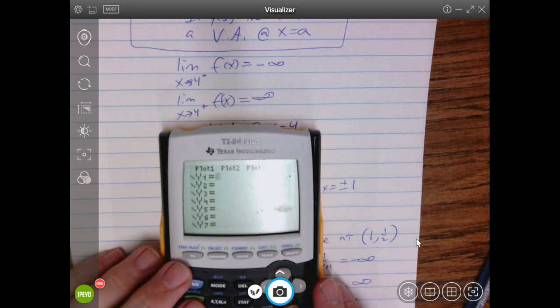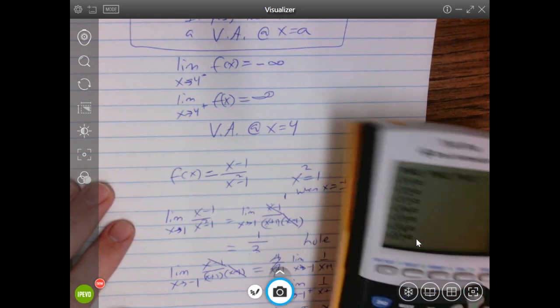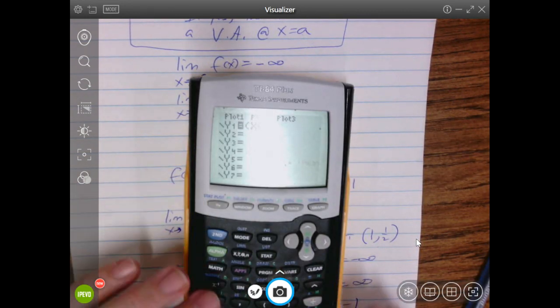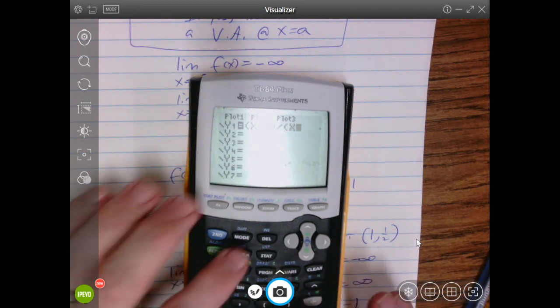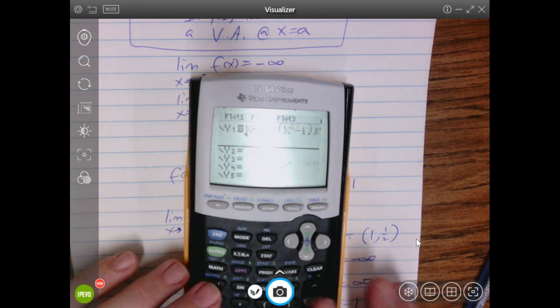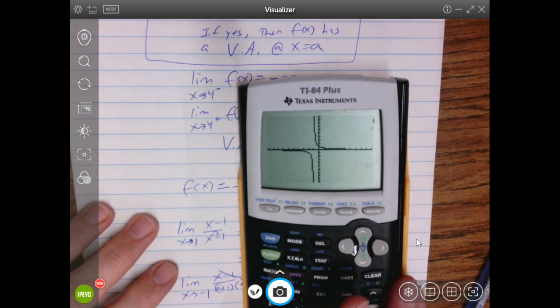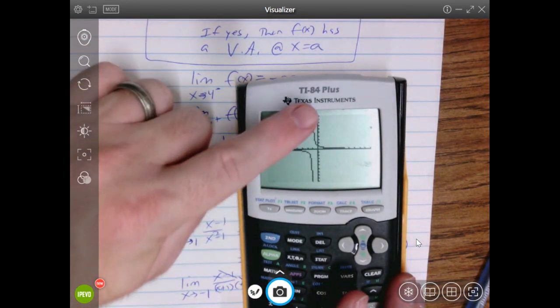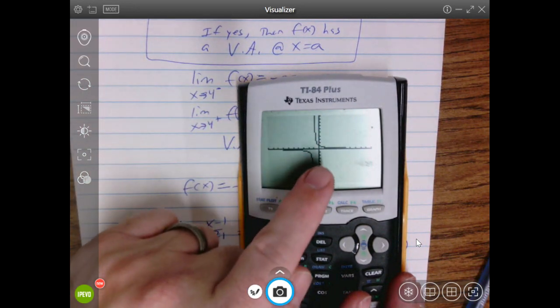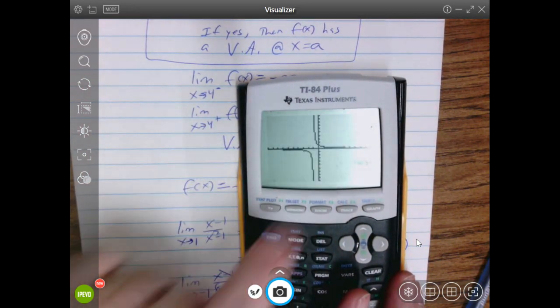Well, we're going to see a hole and we're going to see an asymptote. What did I do? x minus 1 divided by x squared minus 1. Let's do a standard window. And let's take a look. So there's the vertical asymptote at x equals negative 1. Look at x is positive 1. There's no vertical asymptote there.